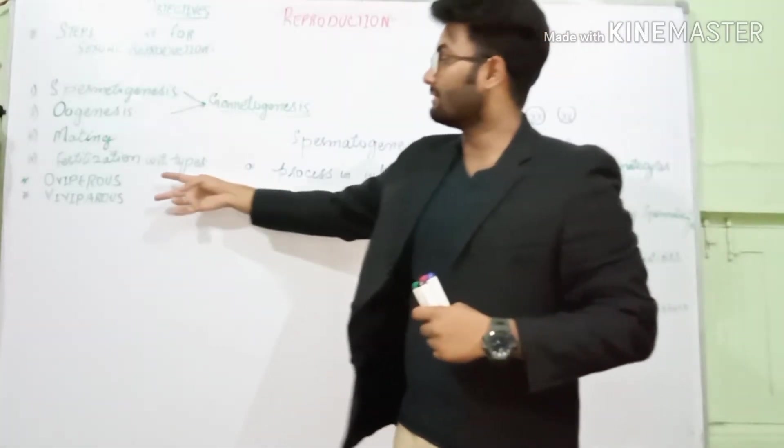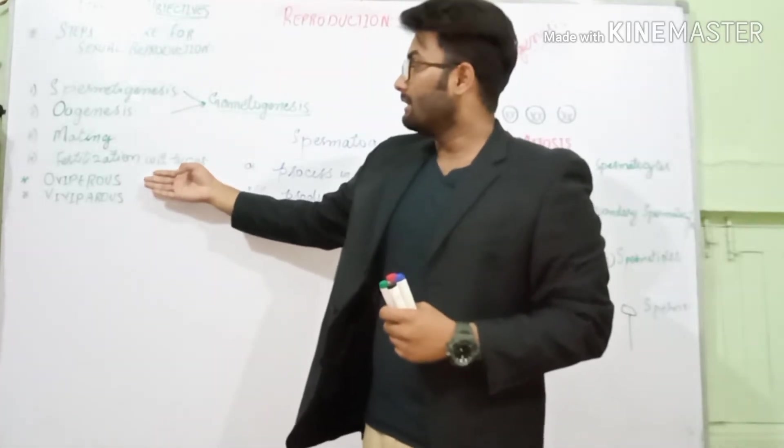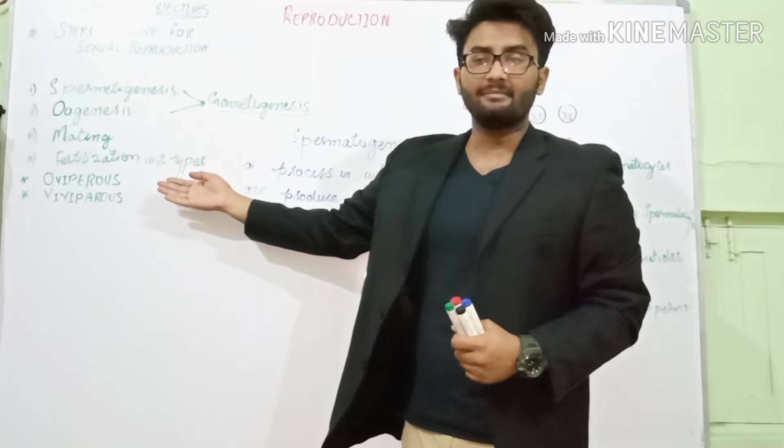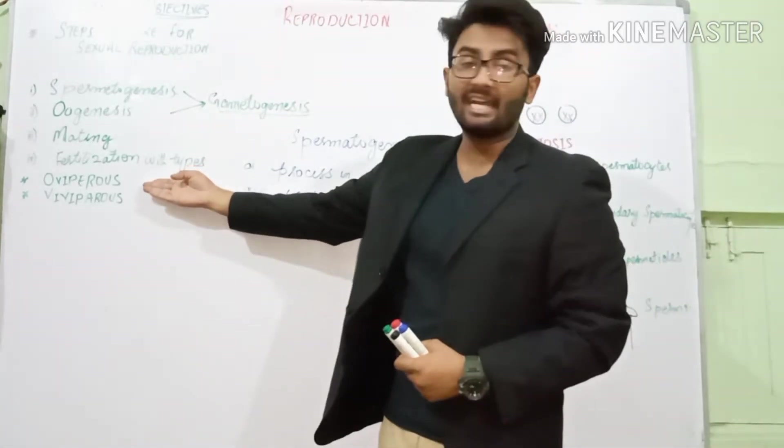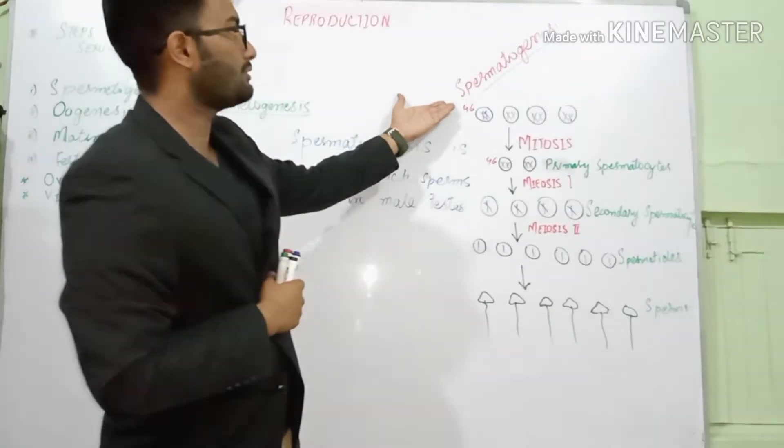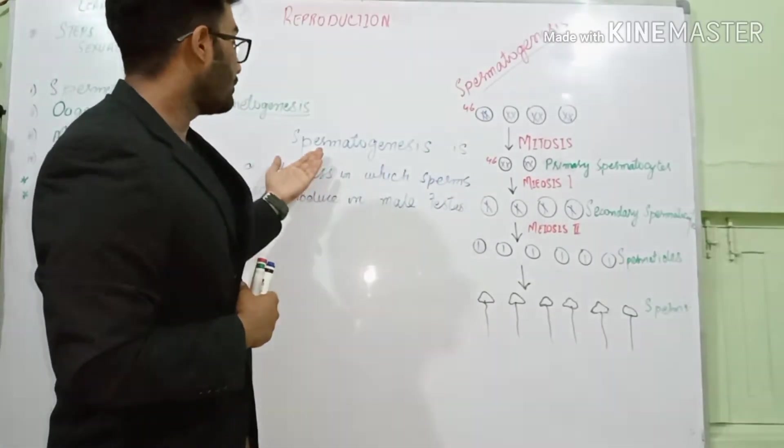And third one is like the two basic terminologies of living organisms. How they reproduce, how they give birth to their living organisms, either they are oviparous or viviparous. Gametogenesis is a process in which living organisms produce sperm or egg gametes.